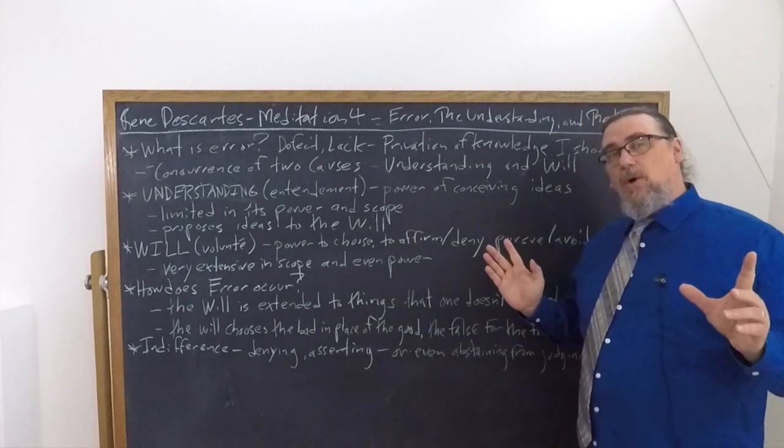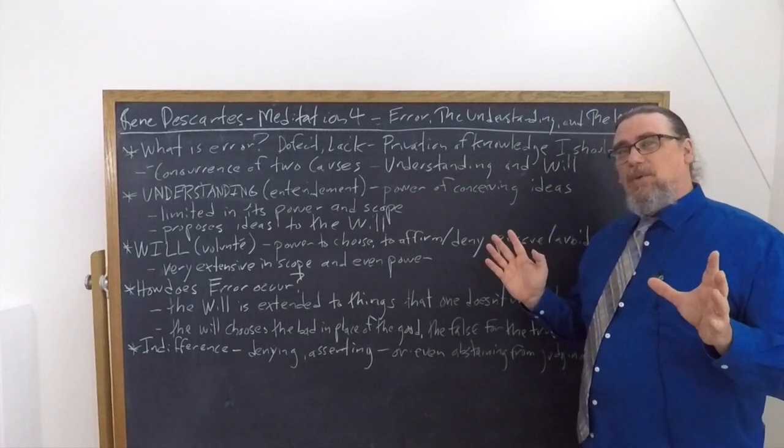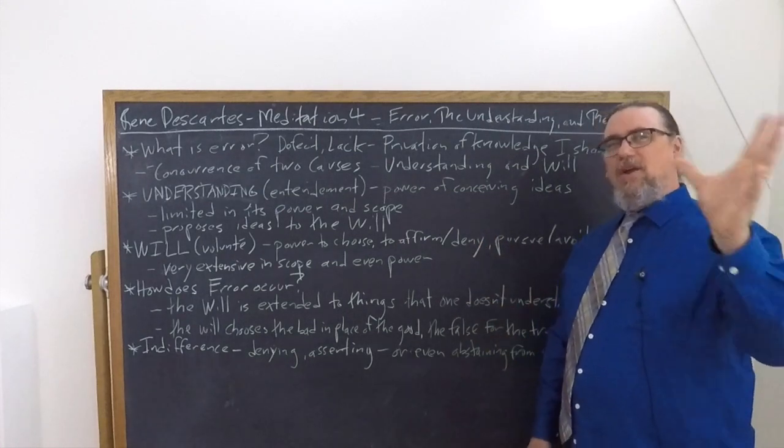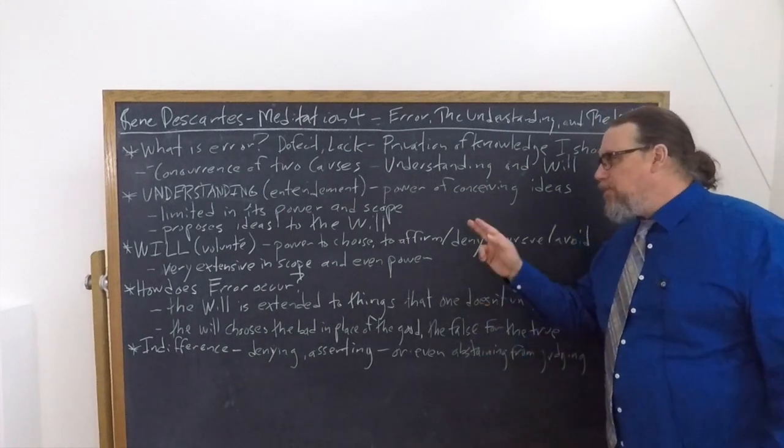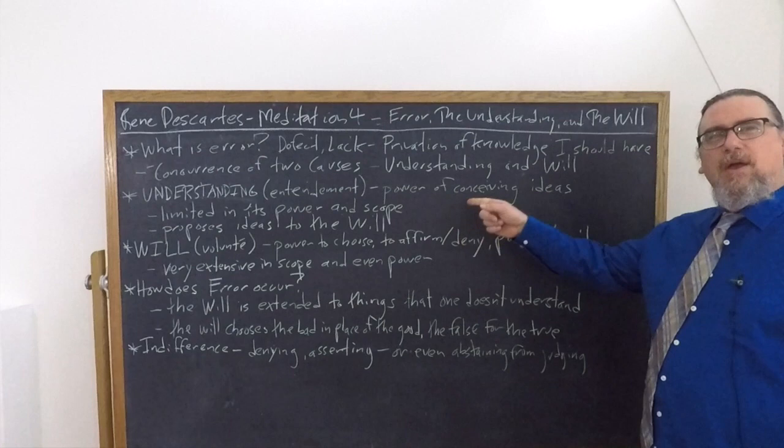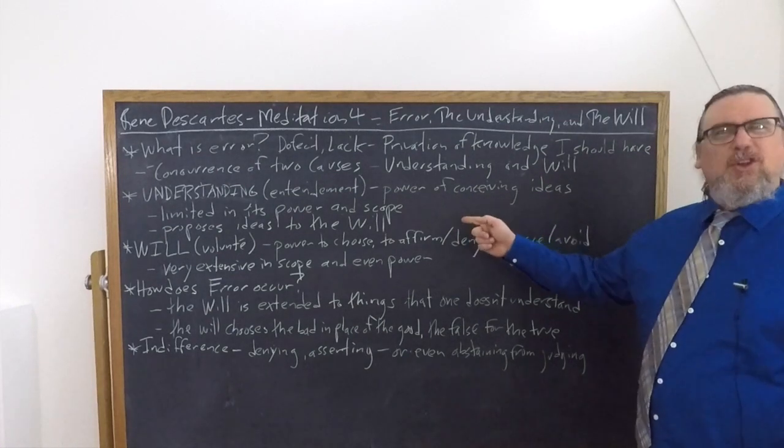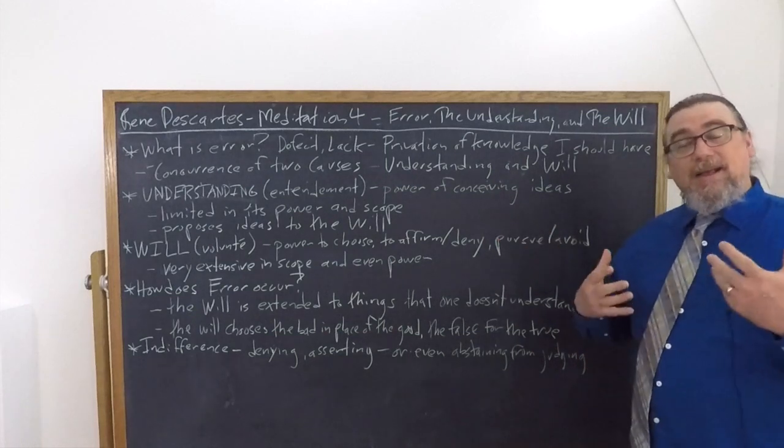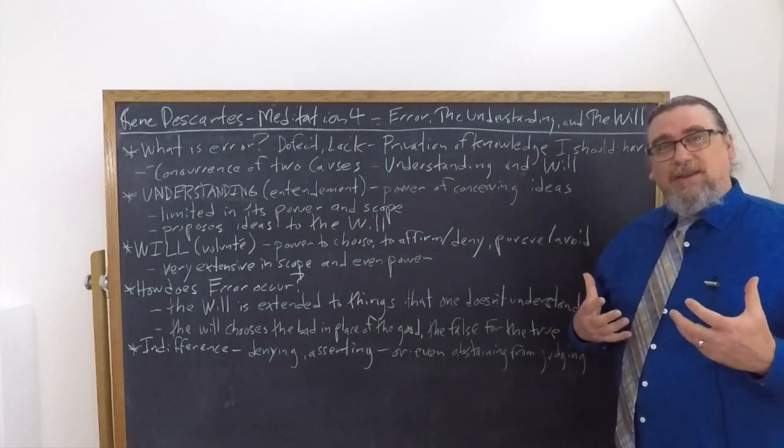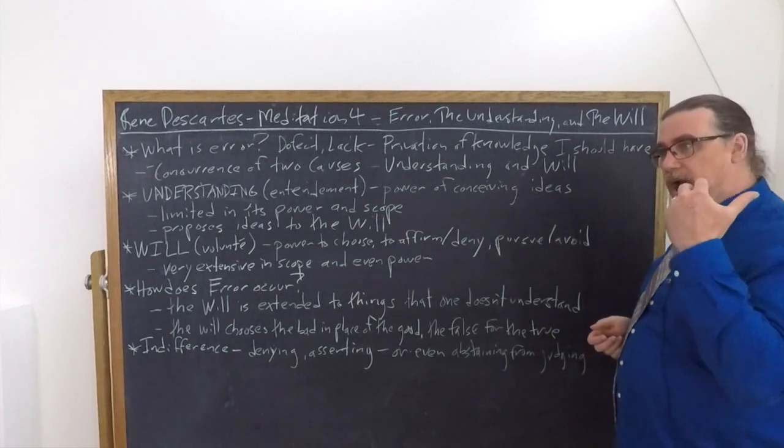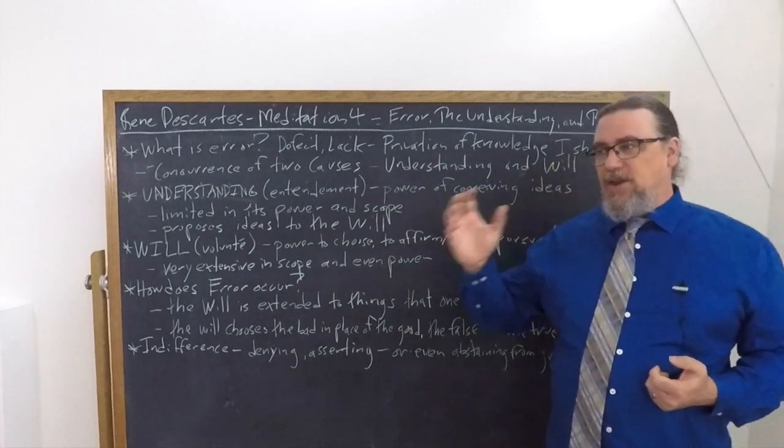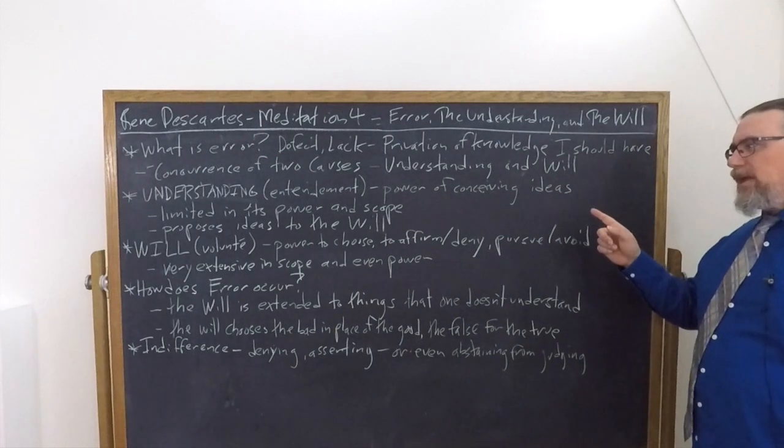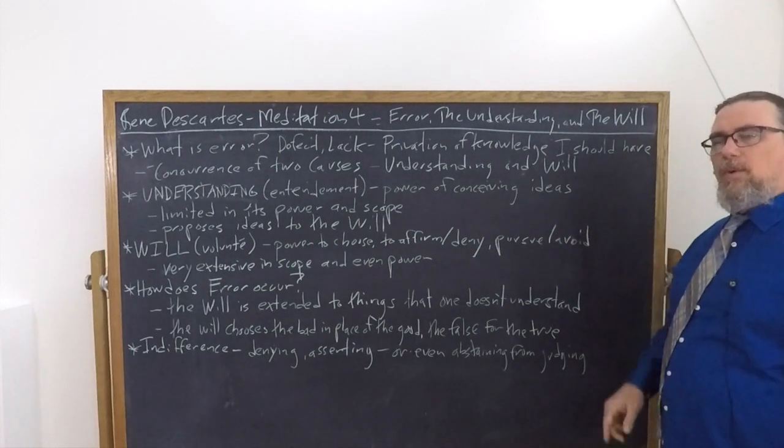Now notice how important this is when we think back to what goes on in meditation two and the entirety of thought within the cogito, to affirm or to deny, assert you could say. Assert, deny, to reject intellectually, to say I hold this to be true, I deny this to be true. It also provides us with the capacity to pursue and to avoid. That is in terms of the modality of goodness and badness.